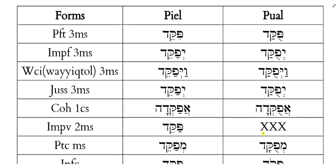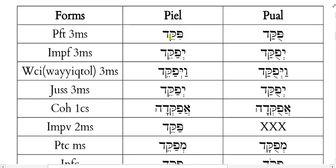For our paradigm verb pakkad, in the Piel it means to muster or to summon, and the Pual would be to be summoned or to be mustered. Let's look at the principal parts and then fill in the vowel pointing for each form on the handout. Looking at the Piel perfect — piccade — think about the dots. The dot in the Pay is a Dagesh Lene, which is the dot that comes standard with any Begadkafat letter. It only goes away if a vowel or vocal Shva precedes it.